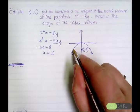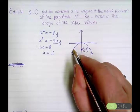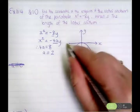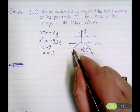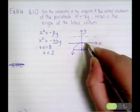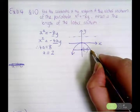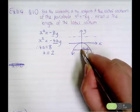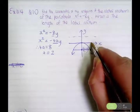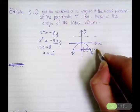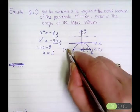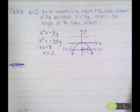Now the latus rectum is the line that is perpendicular to the axis of the parabola, but it's also parallel to the directrix. So the latus rectum goes across from there to there. We know that anywhere along this line, because the coordinate of the focus is (0, negative 2), this point is some x value, negative 2, and this point over here is some other x value, also with y value negative 2.